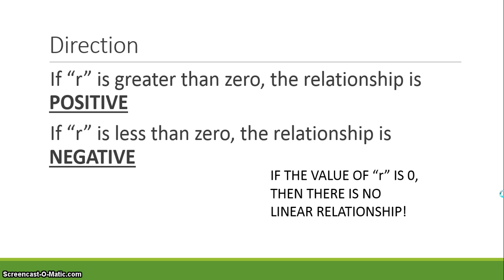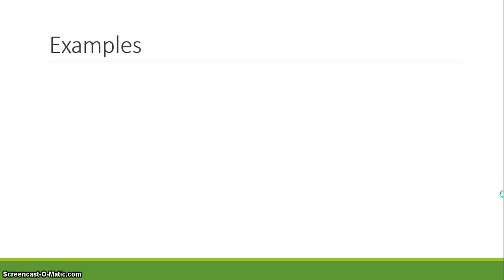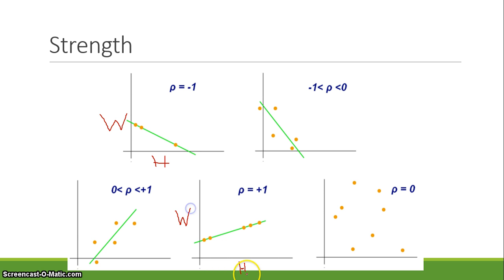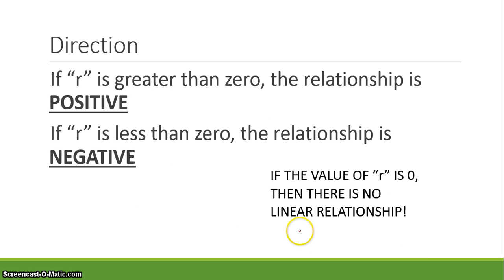If r is greater than 0, the relationship is positive; if r is less than 0, the relationship is negative. Looking at the graph: for negative 1, as height increases, weight is decreasing — that's a negative relationship. For positive 1, as height increases, weight is also increasing — that's a positive relationship. In short, a negative r means that as the x variable increases, the y variable decreases, and a positive r means both variables increase together. If r is 0, there is no linear relationship.